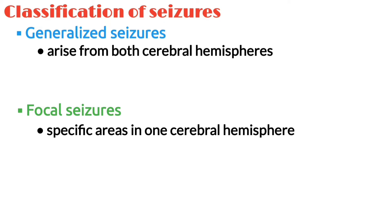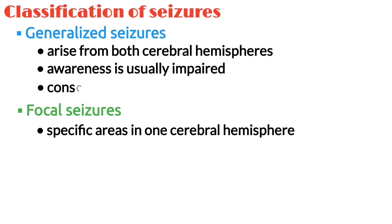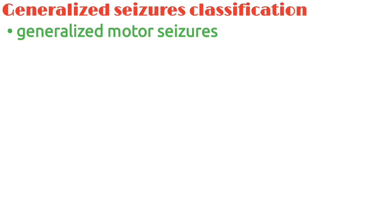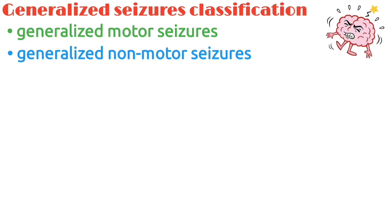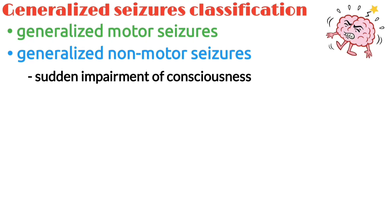In generalized seizures, awareness is usually impaired and consciousness is usually lost. Generalized seizures are subclassified into motor and non-motor seizures, and regardless of the subtype, they almost always cause a sudden impairment of consciousness.